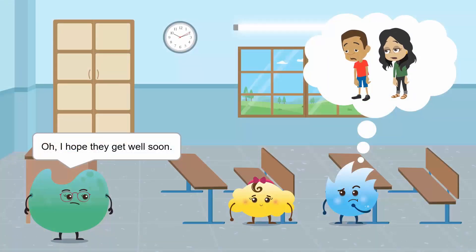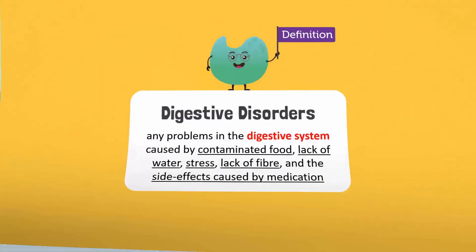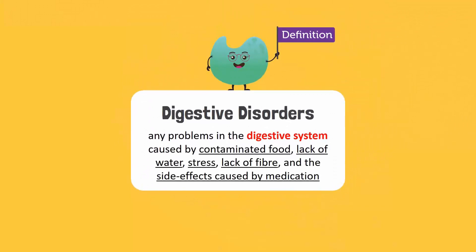I hope they get well soon. Asif and Sara are both suffering from the most common disorders of the digestive system. First, let's see what digestive disorders are. Any problems in the digestive system caused by contaminated food, lack of water, stress, lack of fiber, and the side effects caused by medication can lead to digestive disorders.